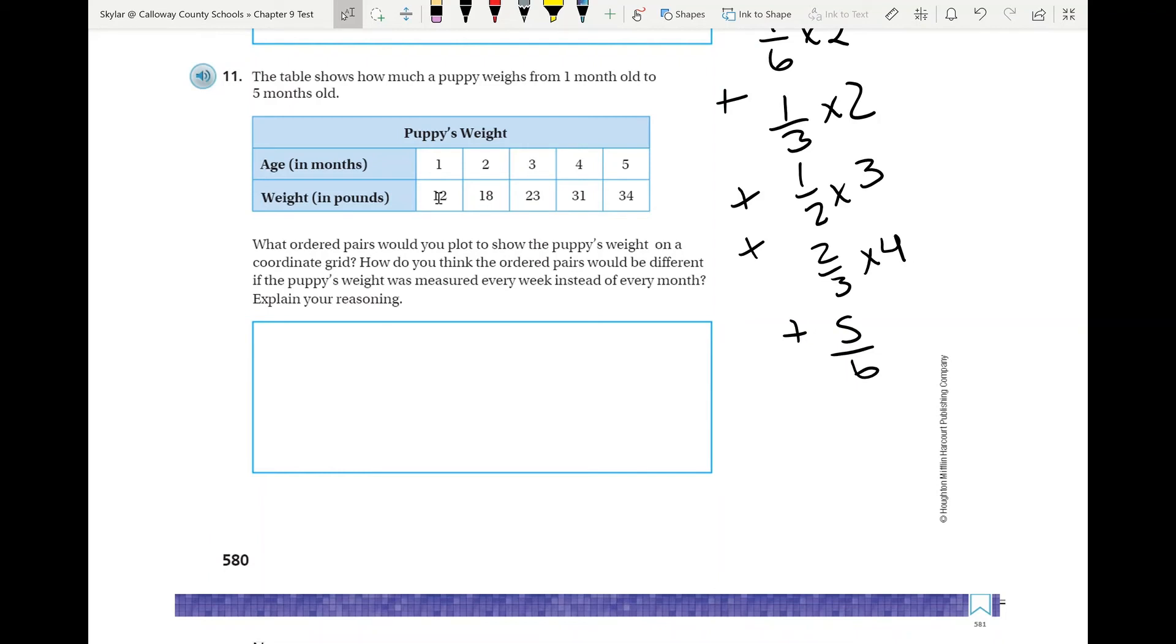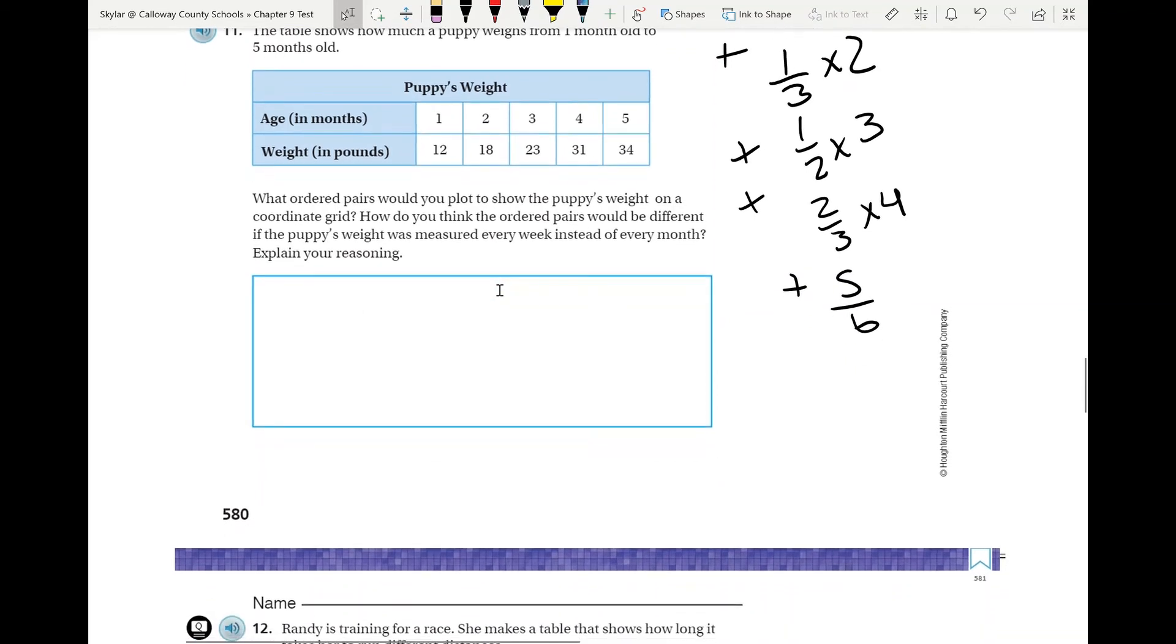And then this one you're going to have to think a little bit. How do you think the ordered pairs would be different if it was measured every week instead of every month? Well, just think, imagine if you were measuring a puppy. If you measured it every week, how would your numbers be different than if you measured it every month? Obviously you'd have more if you did every week, but how would those numbers be different?